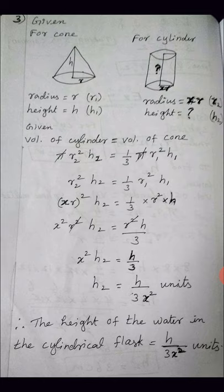Volume of cylinder formula is πr²h. Using r2 and h2 for the cylinder: π·r2²·h2. Volume of cone formula is (1/3)πr1²h1, replacing with r1 and h1: (1/3)π·r1²·h1. Since π is common on both sides, we cancel it, leaving r2²·h2 = (1/3)·r1²·h1.